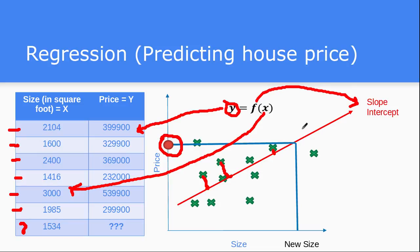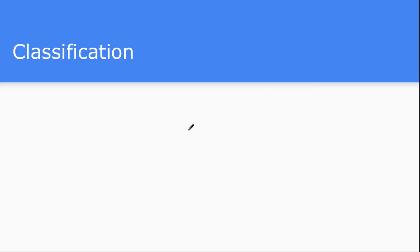In this way we have modeled the complete function f based on the input data given in the form of x and y pairs. Whenever we are given a new size we can predict the possible or predicted house price. This is what regression is — a kind of supervised learning where we are given both x and y as input to the machine learning system.